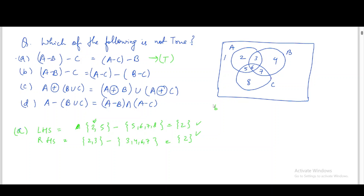Option (b): (A minus B) minus C equals A minus (C union B). We already found the left-hand side is {2}. A minus C gives {2,3}, and B minus C gives {3,4}. Subtracting {3,4} from {2,3} leaves {2}. Both sides are {2}, so this option is also true.